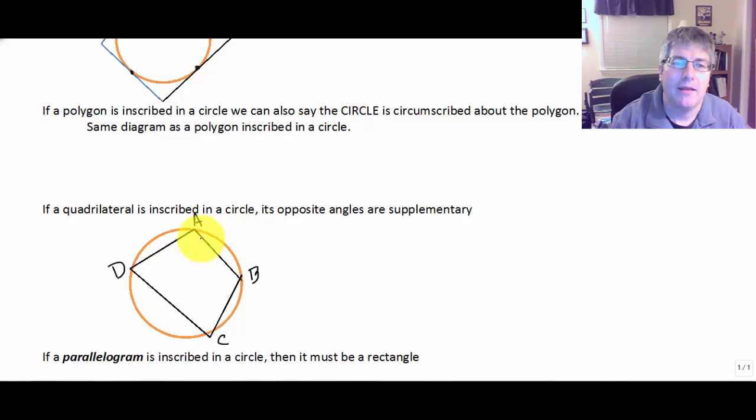We know that the sum of the interior angles of a quadrilateral has to be 360, and so these would be x and 180 minus x, and we might have y and 180 minus y. But regardless, these would all add up to 360, and the opposite angles have to be supplements.